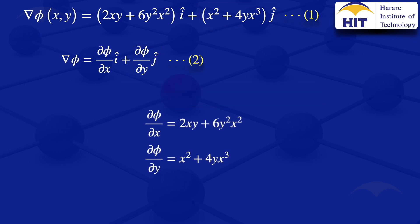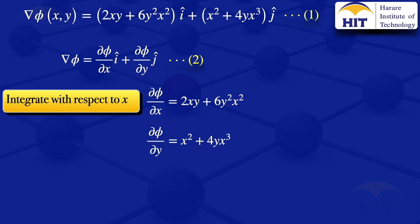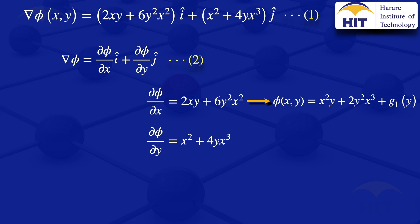We now have those two new equations. I will integrate the first equation with respect to x. Integrating the partial derivative with respect to x gives us φ. So φ(x, y) = x²y + 2y²x³ + g₁(y), where g₁(y) is a function of y only — that is our constant of integration for the partial derivative.